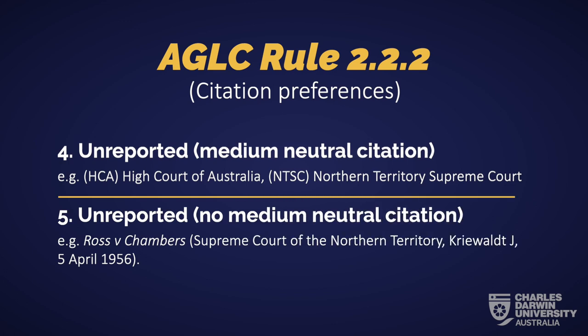A medium neutral citation is a citation system that doesn't depend on a publisher. For example, decisions published on the court website that have a judgement number instead. Judgements with no medium neutral citation just have the name of the court, the judge, and the date.